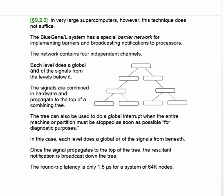The tree can also be used to do a global interrupt. In this case, we care about whether any of the nodes below has an urgent problem that requires stopping the whole machine. The same network is used to do a global OR. The round-trip latency is only 1.5 microseconds for a system of 64K nodes.